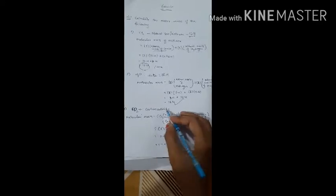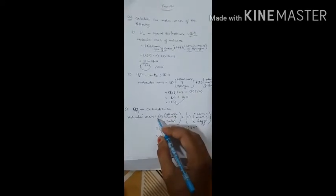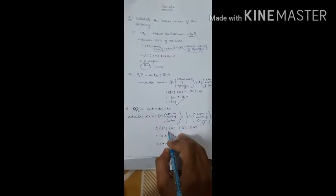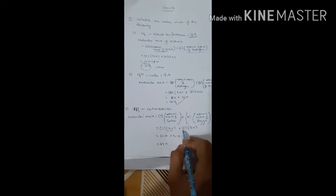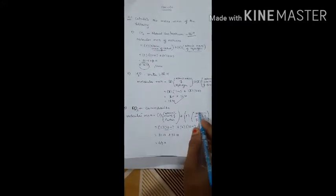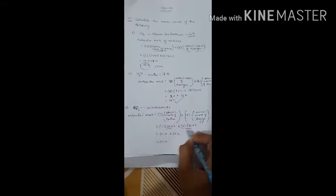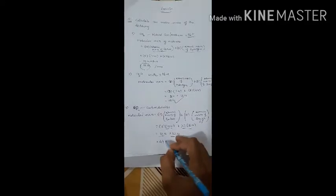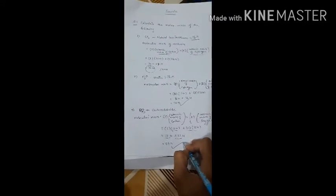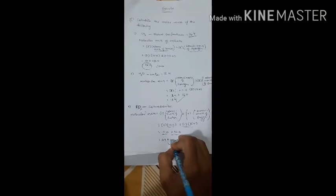The last one is carbon dioxide gas. Using the same method: number of atoms of carbon, that is one, into atomic mass of carbon (12), plus two into atomic mass of oxygen (two into sixteen equals 32). So 32 plus 12 equals 44 unified mass. That is the answer for question number one.